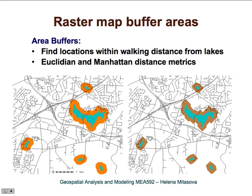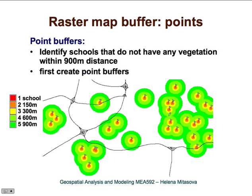We can use buffers around areas to find all locations or streets within walking distance from lakes — the shape of the buffer depends on the distance metric chosen. In addition to lines and areas, we can also create buffers around points. For example, we can identify schools that have no vegetation within a 900-meter distance. As a first step we create a 900-meter buffer, and for more detailed analysis we can use several steps from 150 meters to 900 meters to analyze at different distances.